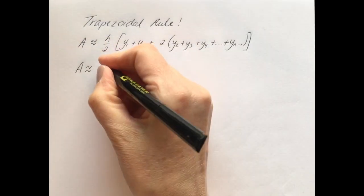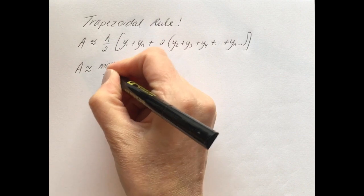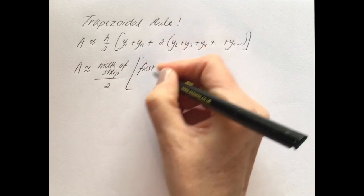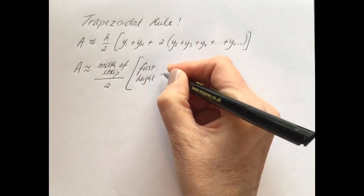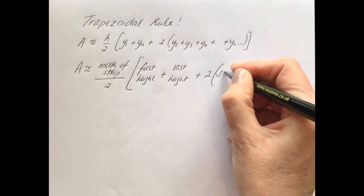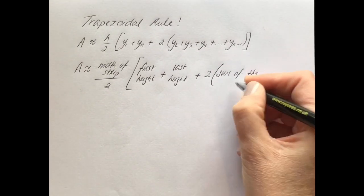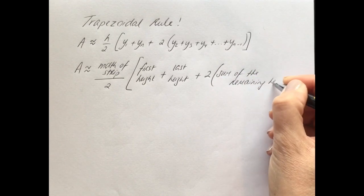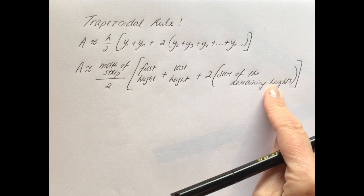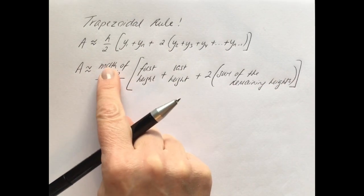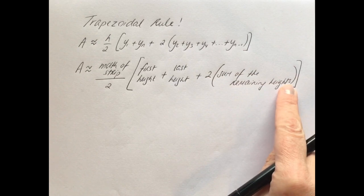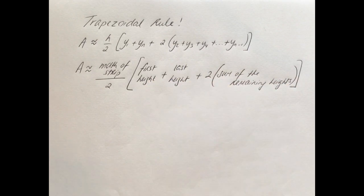It's much easier to consider the trapezoidal rule like this. Your h is always going to be the width of the strip, divided by 2. Then y1 will always represent the first height, plus the last height, plus twice the sum of the remaining heights. That's a much easier way to understand it: width of the strip, then first add the last, add twice the sum of the remaining heights.